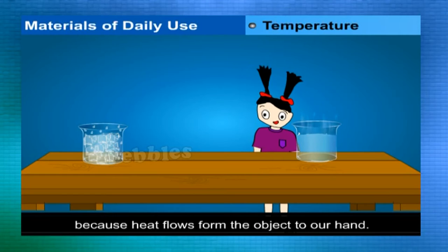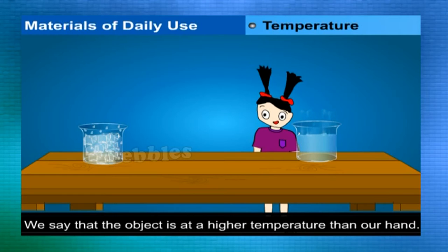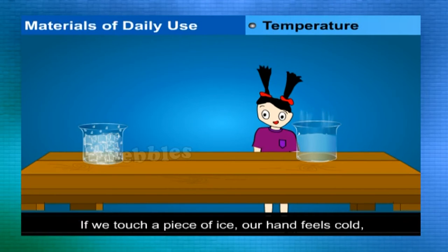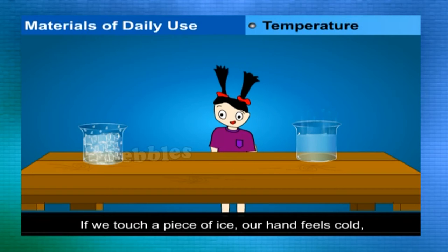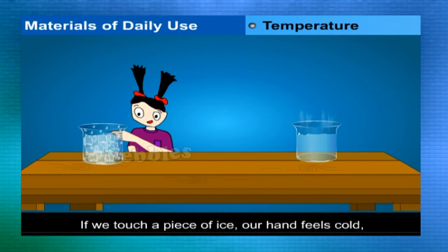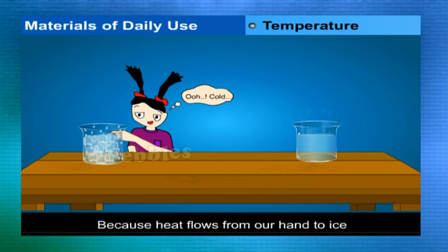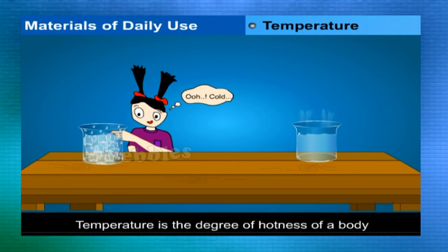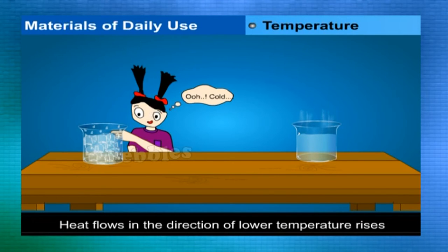Temperature: when we touch a hot object our hand becomes warm because heat flows from the object to our hand — the object is at a higher temperature. If we touch a piece of ice, our hands become cold because heat flows from our hand to the ice. Temperature tells us how hot or cold a body is.